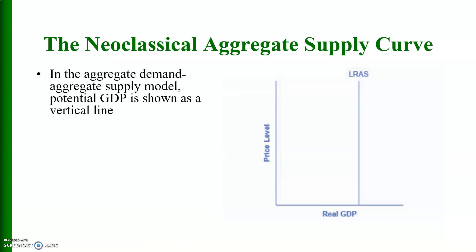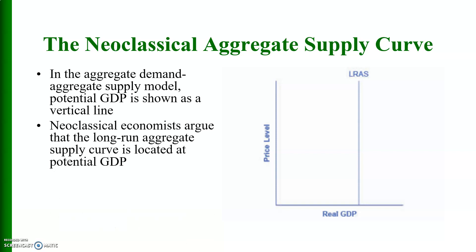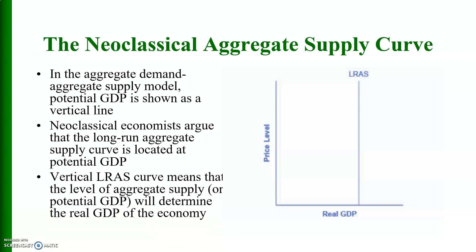The new classical aggregate supply curve is a vertical line, shown in the diagram parallel to the y-axis, representing the long-run aggregate supply curve. New classical economists argue that the long-run aggregate supply curve is located at potential GDP — the full employment level of output — and that this vertical curve means aggregate supply determines the real GDP of the economy.